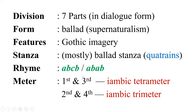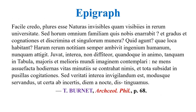In ballad stanza, the first and third lines use iambic tetrameter — 8 syllables — while the second and fourth lines use iambic trimeter — 6 syllables. The most predominant meter in English is iambic pentameter with 10 syllables. However, Coleridge doesn't strictly follow all these rules — somewhere he goes against them.